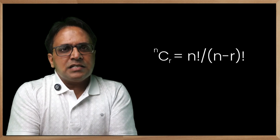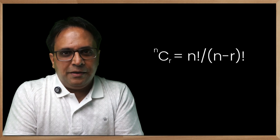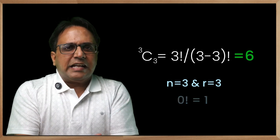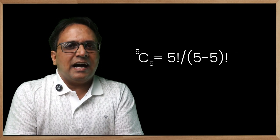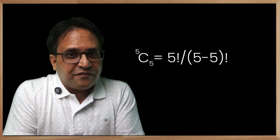Here in our case, for a three-digit number, n and r are both 3. Putting that in the formula, we get the value as 6 - straight answer. Now even if it increases to five, we can get the answer as 5C5 = 5!/(5-5)!, which gives 120.